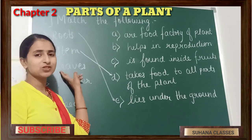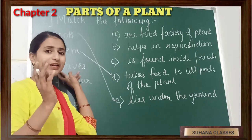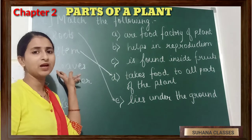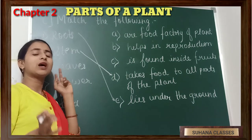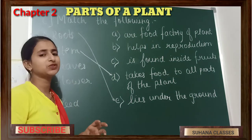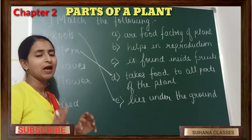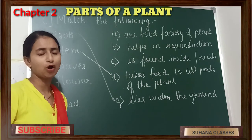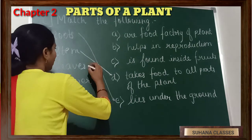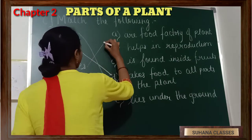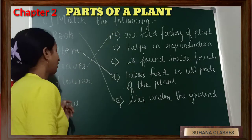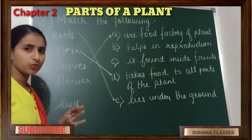Next one is leaves. Leaves are the kitchen of the plant — also called the food factory — because leaves prepare food for the whole plant. So leaves match the 'food factory' option.